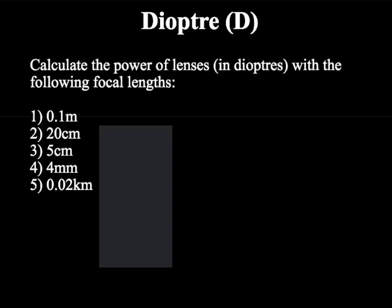So if we were to take question 1 where we are given a focal length of 0.1 metres, because the focal length is already in metres we do not need to convert it, instead we simply need to do 1 divided by 0.1 metres.